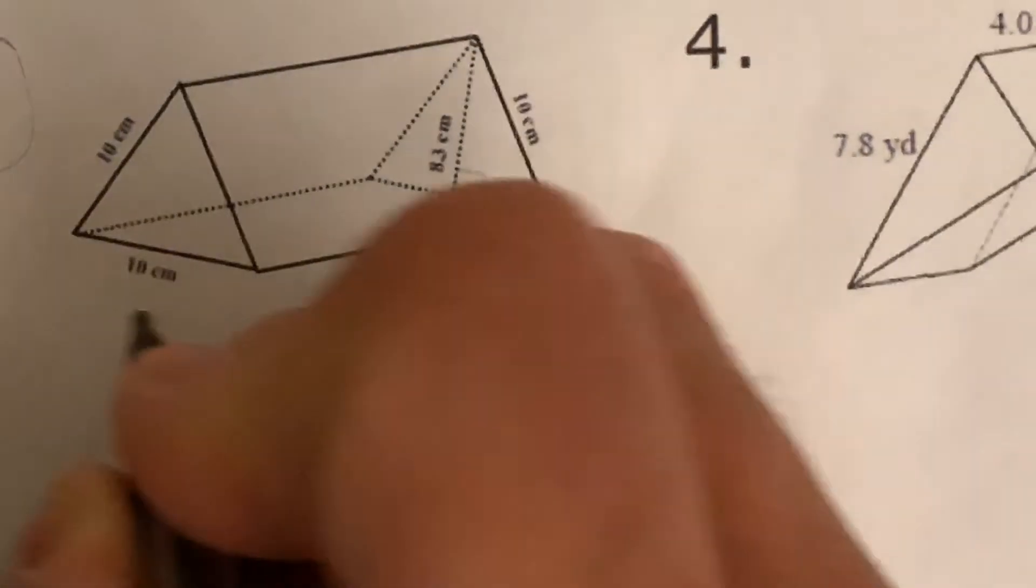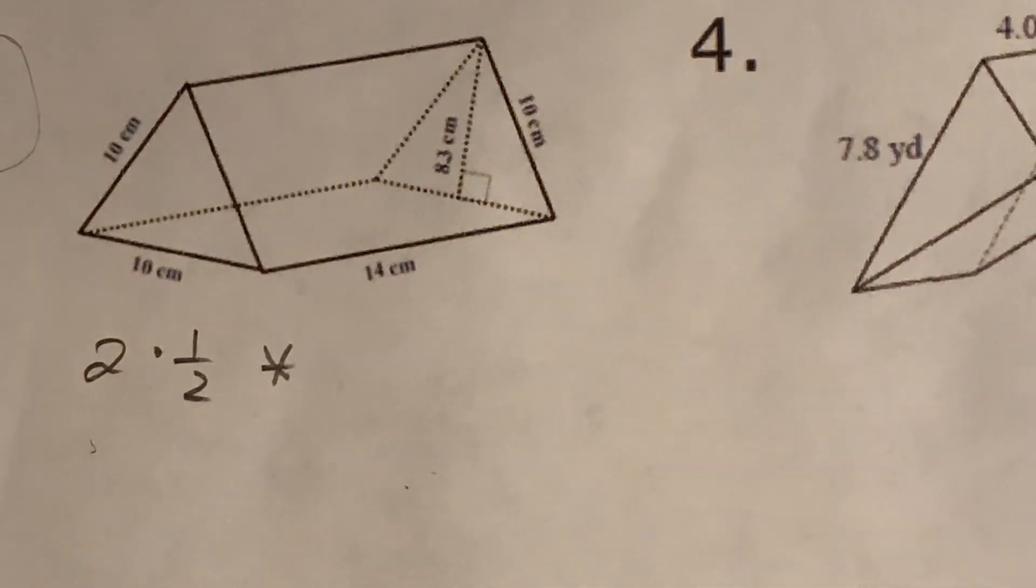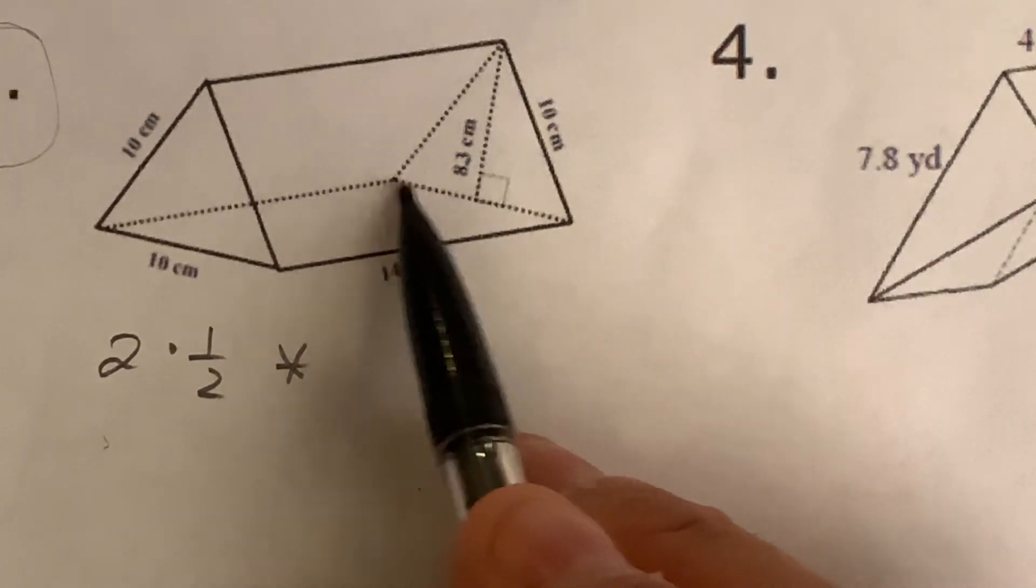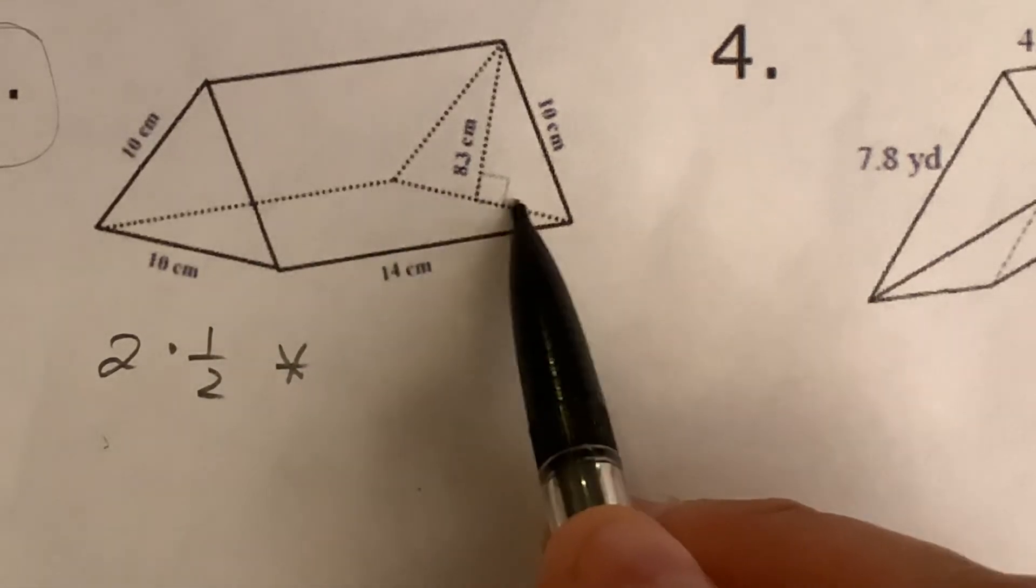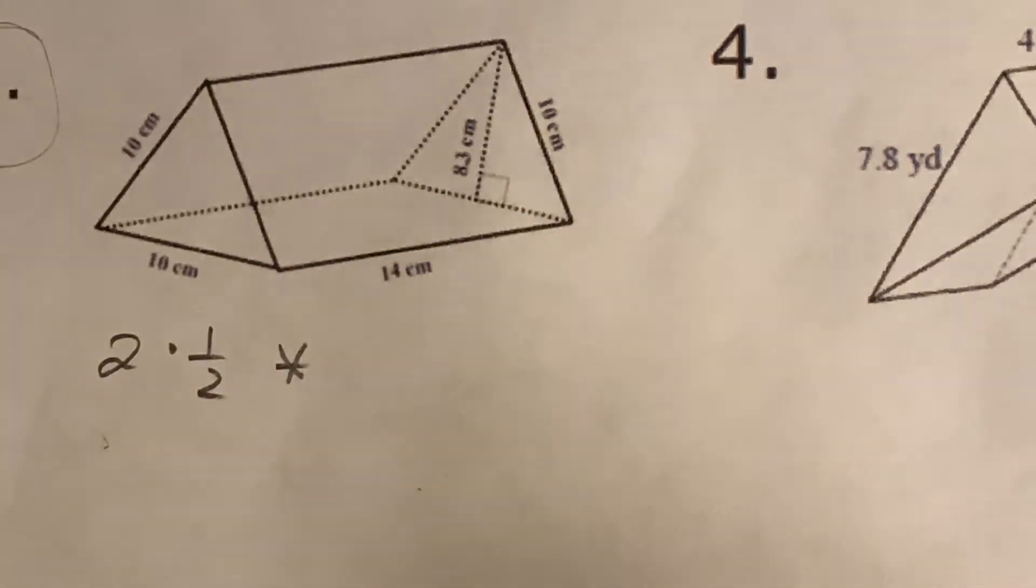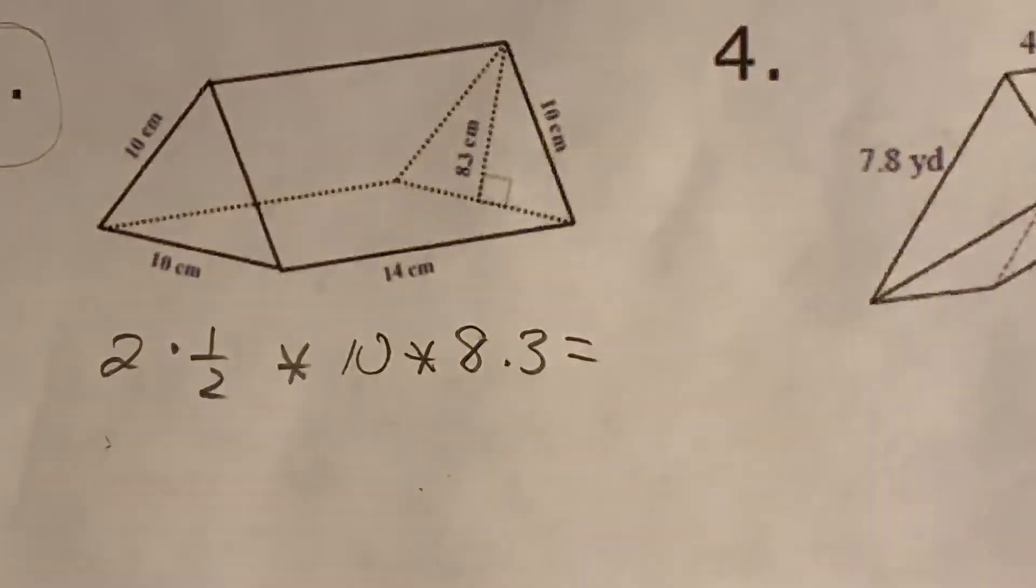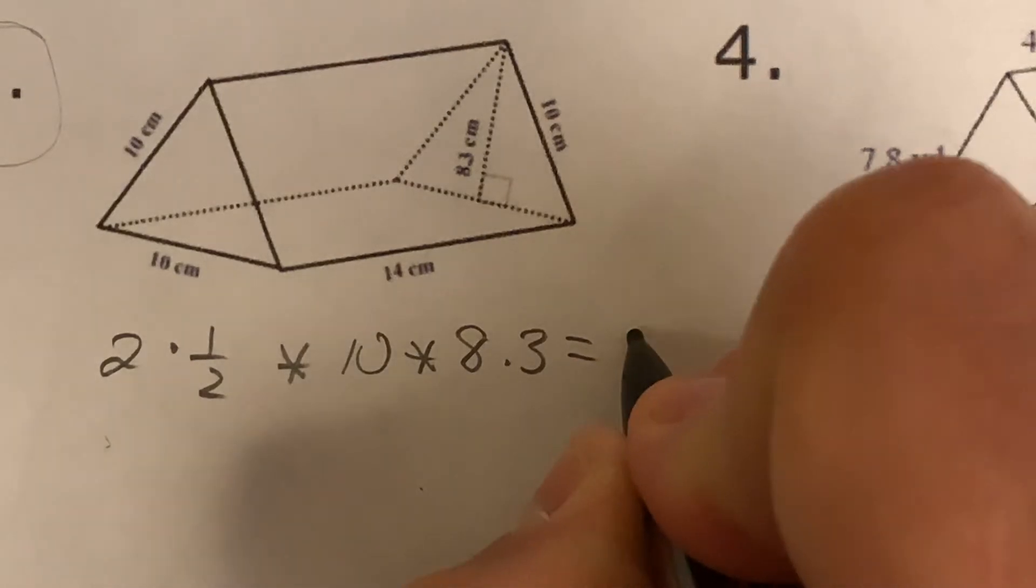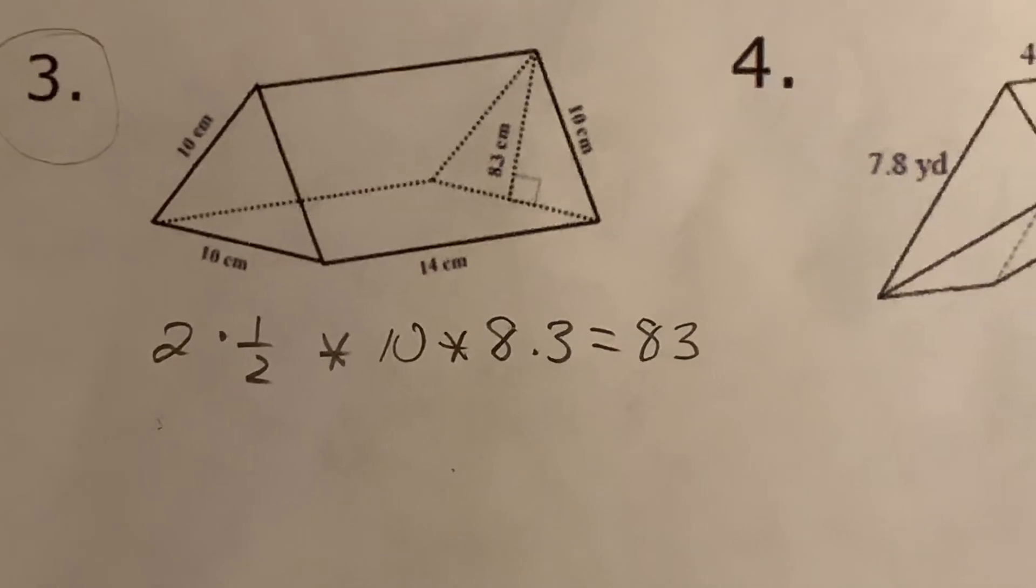So first, the triangles. There's two triangles on each end. So that's two times a half times what are the base and height of the triangles? Well, that would be at the right angle. So the bottom here is 10, because that's 10 right there. It's the same. So 10 times 8.3. Okay, we can do that one first. Again, you don't need to, you can just skip this part. 10 times 8.3 is 83.